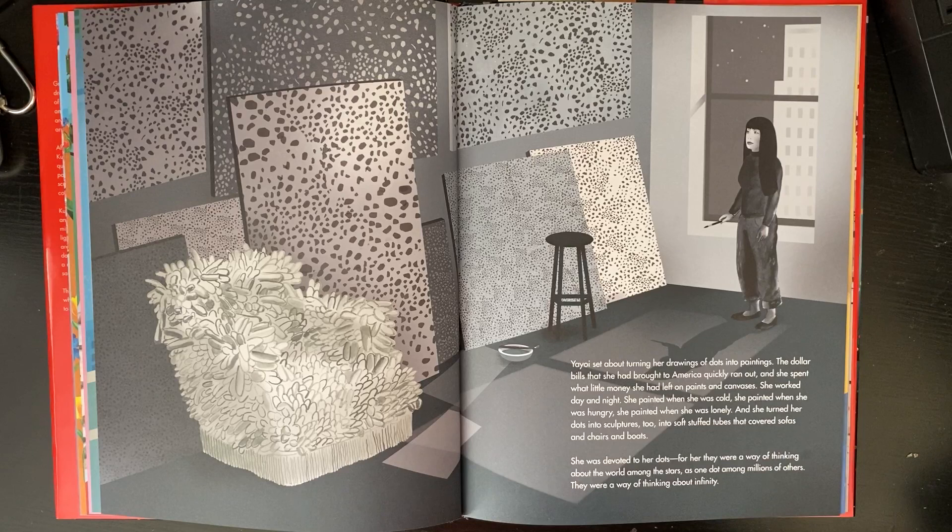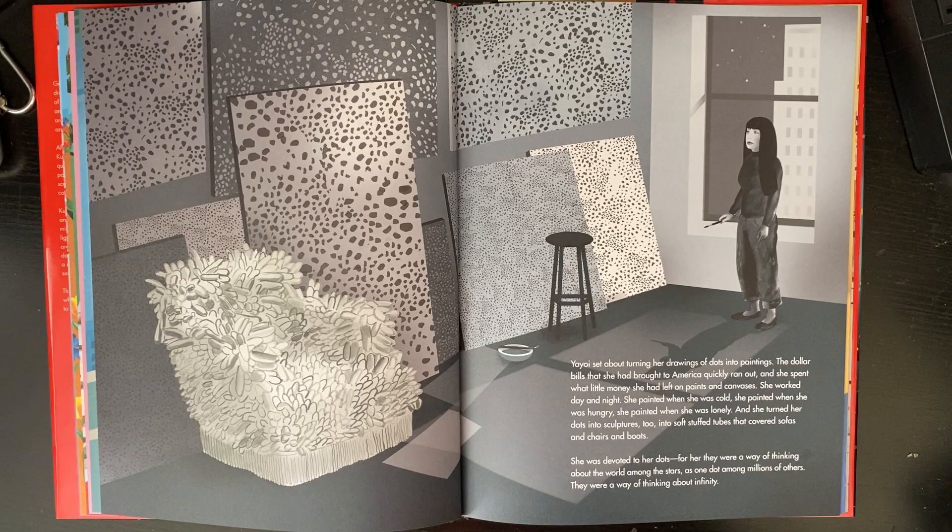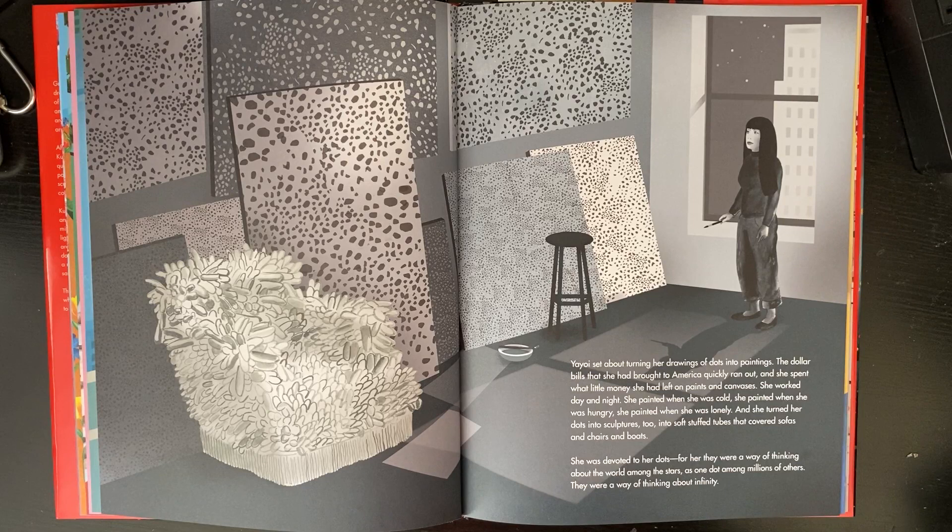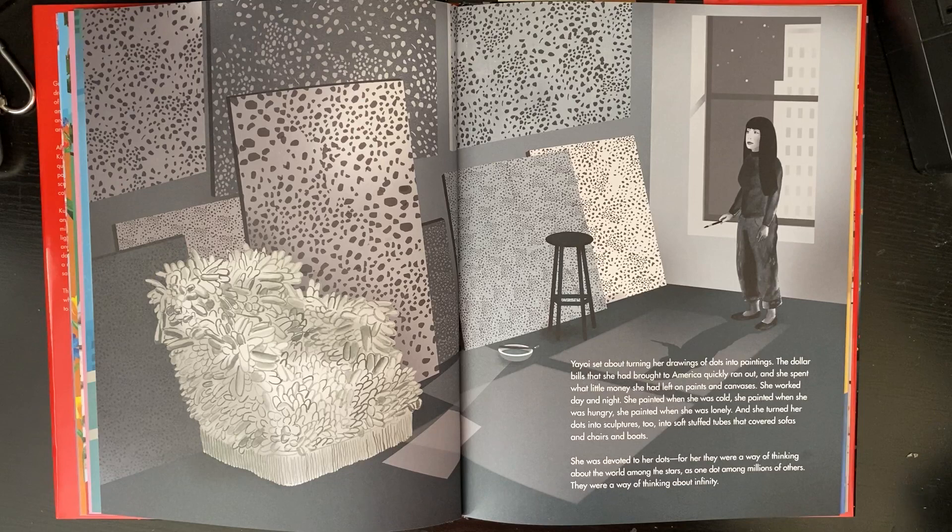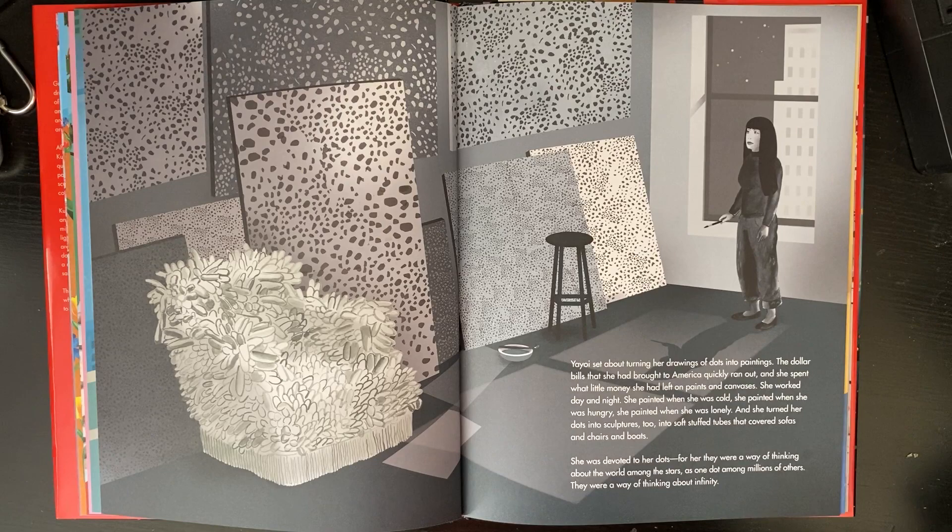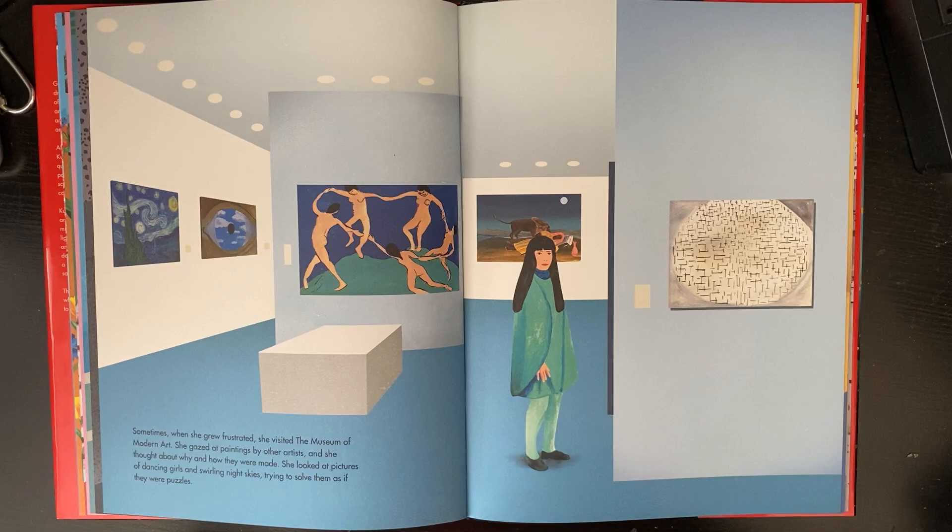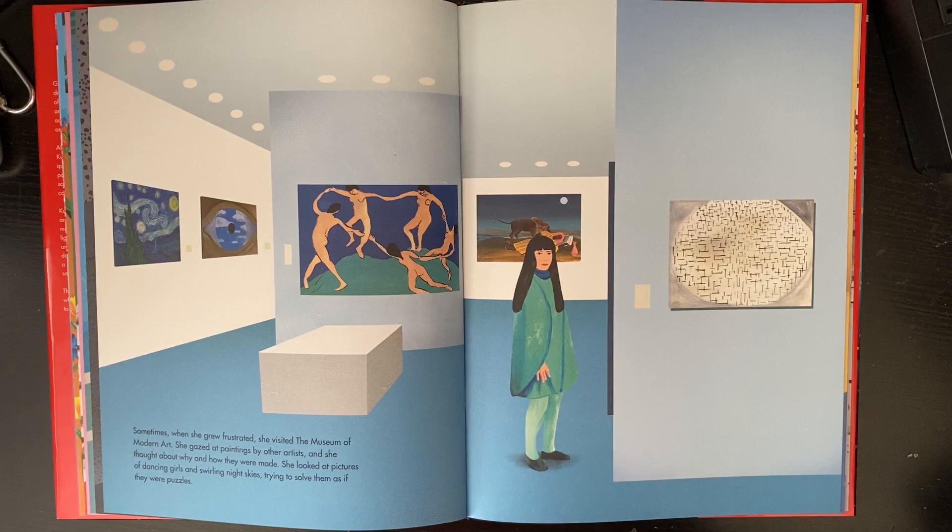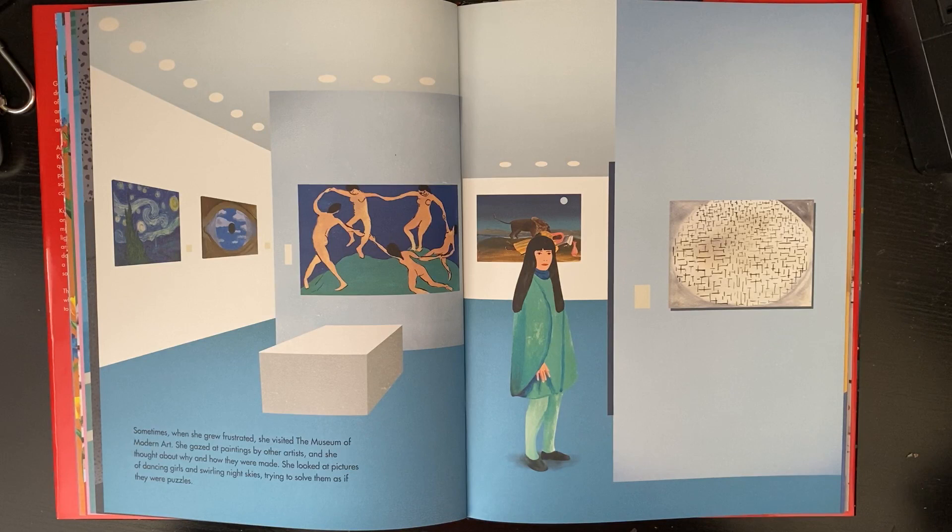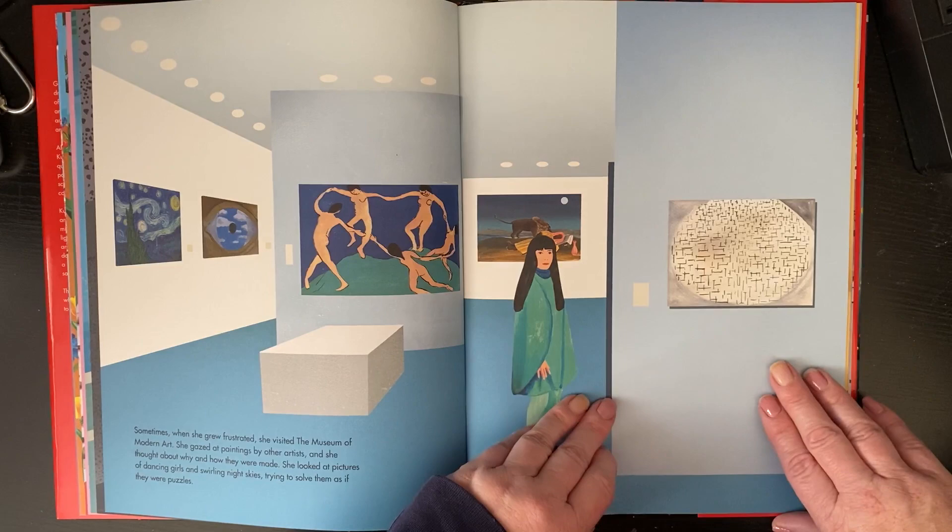She turned her dots into sculptures too, into soft stuffed tubes that covered sofas, chairs, and boats. She was devoted to her dots. For her, they were a way of thinking about the world among the stars, as one dot among millions of others, a way of thinking about infinity. Sometimes when she grew frustrated, she visited the Museum of Modern Art. She gazed at paintings by other artists and thought about why and how they were made, trying to solve them as if they were puzzles.